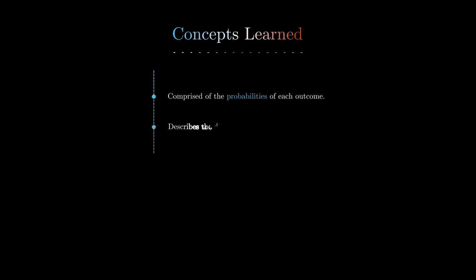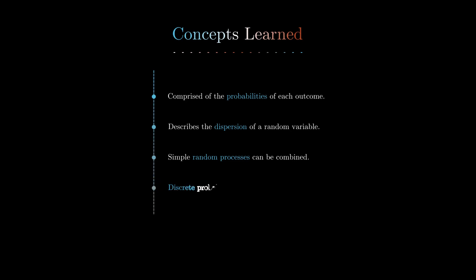To sum up today's lesson: the probability distribution is comprised of the probabilities of each outcome. The probability distribution describes the dispersion of a random variable — whether outcomes are evenly spread or not. Simple random processes like coin tosses can be combined to generate more complex multi-coin toss scenarios. The sum of all discrete probabilities in a probability distribution is always equal to one. Thank you for listening.